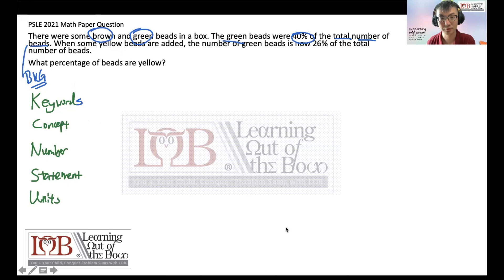Then we have some yellow beads added. Double line to show the change. In fact, change is really important to be highlighted because when there's a change, there's something to solve. The number of green beads is now 26% of the total number of beads.